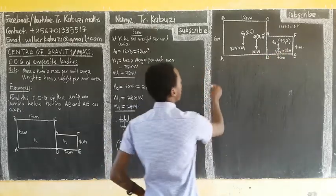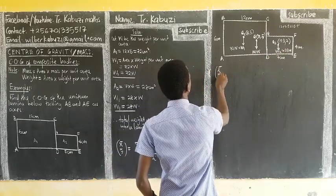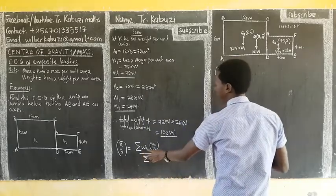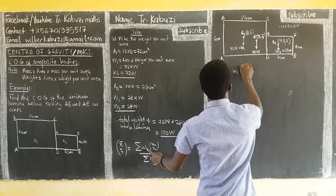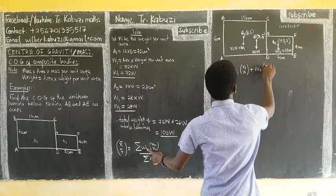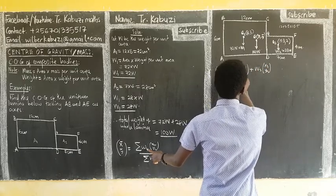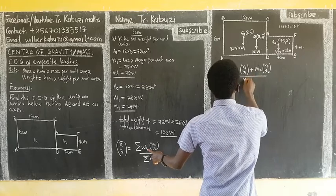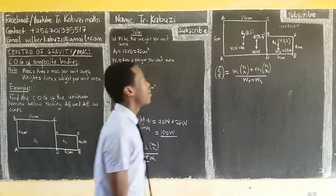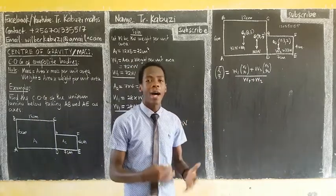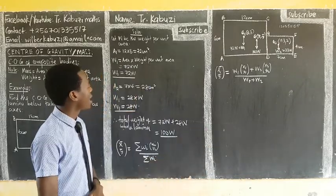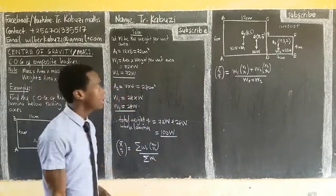We know the weight and coordinates for each section, so we apply our formula. x̄, ȳ equals the sum of each weight times its coordinate, divided by the sum of the weights — that is W1 times its coordinate plus W2 times its coordinate, all over W1 plus W2. Some people use a table method, but I find this method easier.